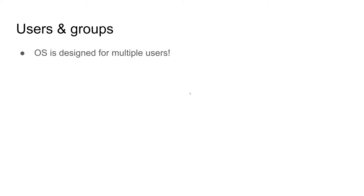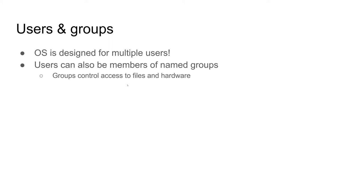So let's talk about users and groups. The operating system, Ubuntu, is designed for multiple users. You can have multiple people logged in at the same time — they all have their own set of files, and users can be members of groups. Your role as a user and what groups you're in controls which files you can access on the computer and which hardware you can use. On Windows, you can think of the administrators group, where you need to be an administrator to install a program for the whole computer. It's just like that.